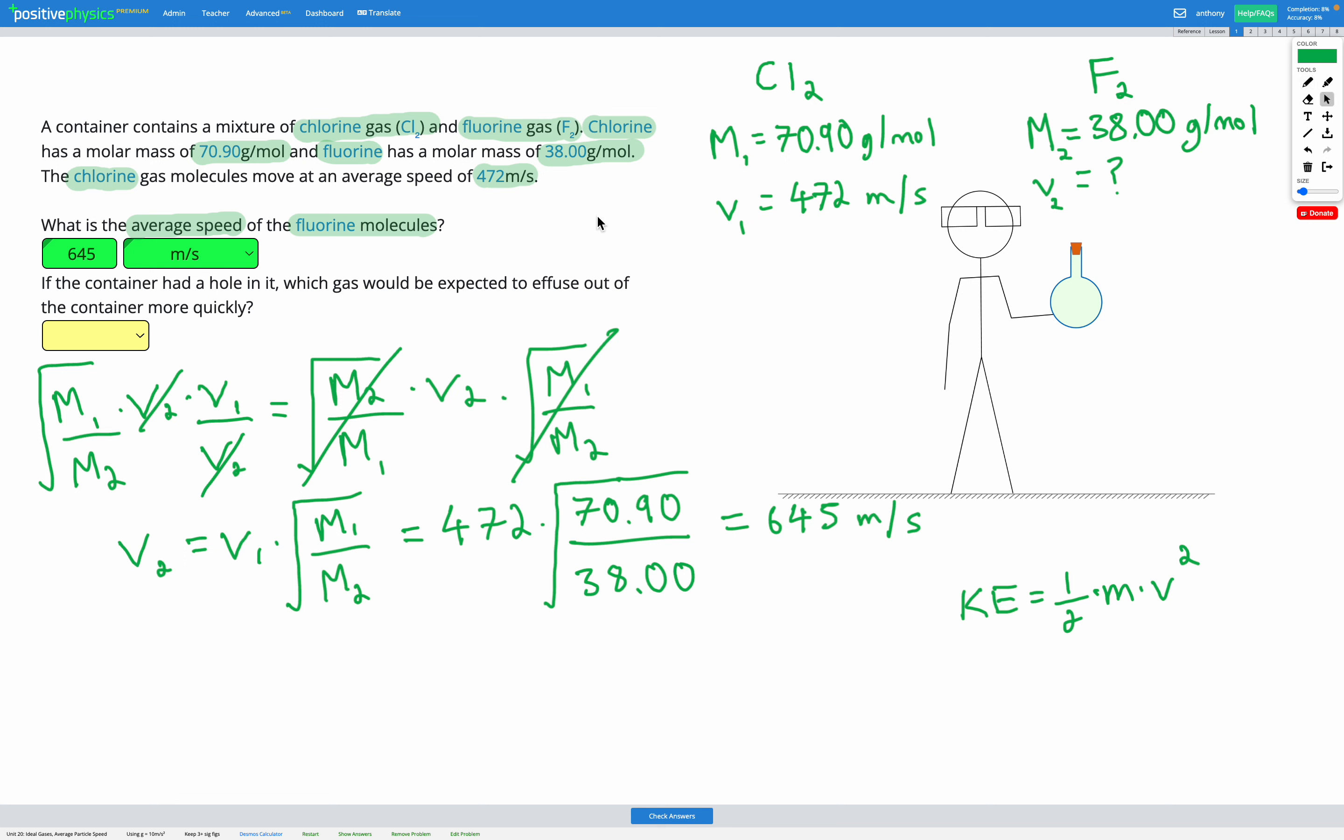Okay, finally, the question asks, if a container had a hole in it, which gas would be expected to effuse out of the container more quickly? In other words, which would leak out more quickly? That's going to be the gas that's moving faster. That's the one that's going to leak out more effectively. And the one moving faster is fluorine. So our answer is fluorine.